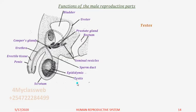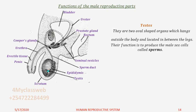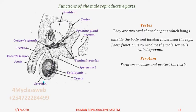We shall begin with the testes. They are two oval-shaped organs which hang outside the body and are located in between the legs. Their function is to produce the male sex cell which we call the sperm. From there we shall look at this layer here which encases the testes — it is called the scrotum. Its work is to protect the testes.